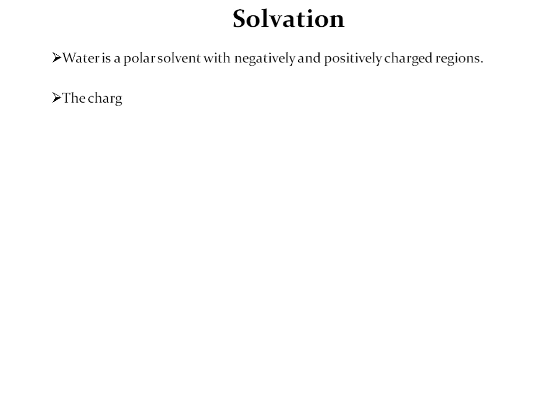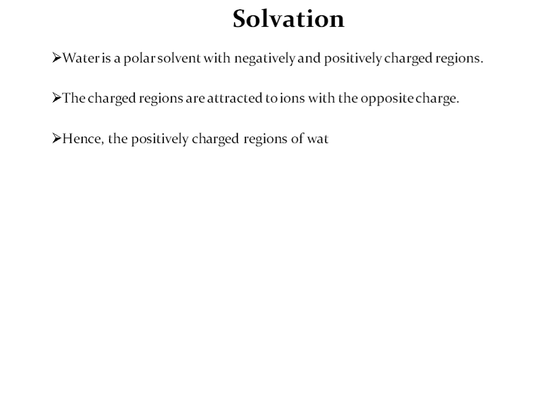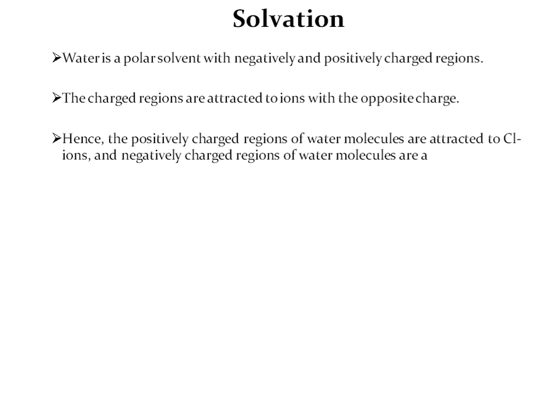Water is a polar solvent with negatively and positively charged regions. Oxygen is responsible for the negatively charged region, and hydrogen is responsible for the positive charge. The charged region is attracted to the ion with opposite charge. Hence, the positively charged region of water molecules is attracted to chloride ions, and the negatively charged region is attracted to sodium ions — meaning hydrogen is attracted towards chloride, while oxygen is attracted towards the sodium ion.